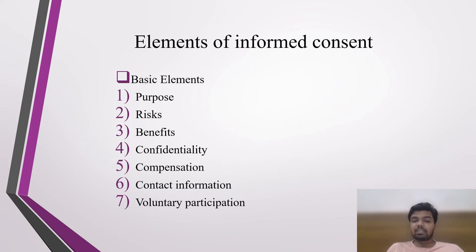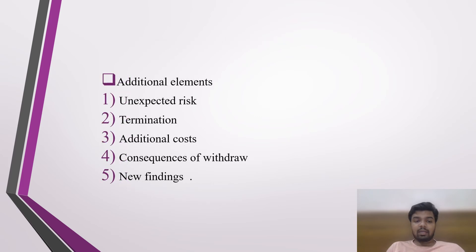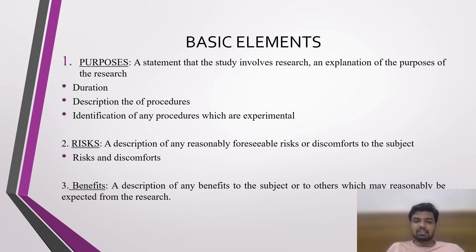The basic elements of informed consent include: purpose — a statement that the study involves research, an explanation of the purposes of the research, the need for the research, the duration, descriptions of all procedures, and identification of any experimental procedures. Risk — a description of any reasonably predictable risks or discomfort to the subject. Benefits — a statement describing any benefits to the subject or others which may reasonably be expected from the research.